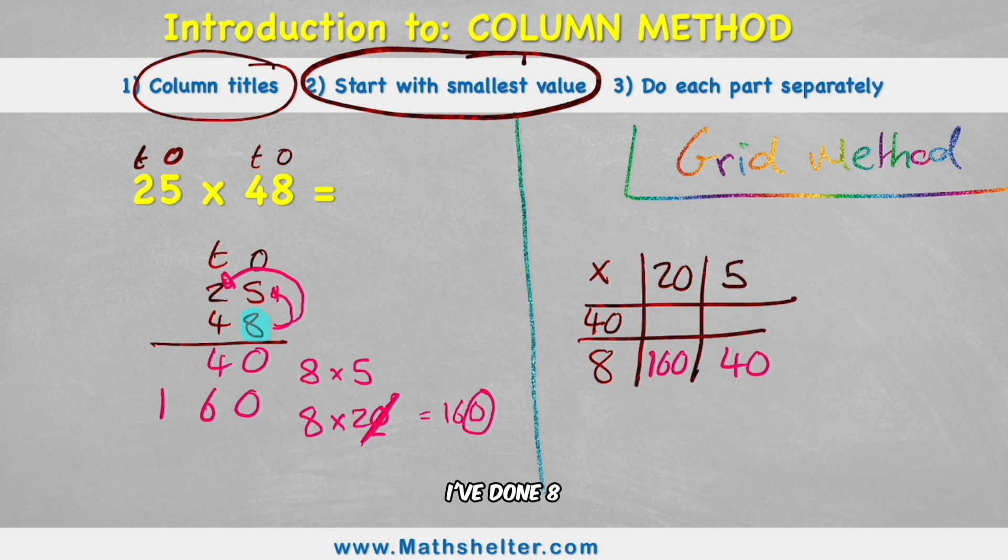Now I've finished with my 8 because I've done 8 times 5 and 8 times 20. I'm now going to move on to my 4. But remember, it's not a 4. It's a 40. So my first question is 40 multiplied by this 5. I'll put it here. 40 times 5. And I'm going to use the same logic. I'm going to forget about this 0 for a moment and just do 4 times 5 is 20. And then put back my 0 at the end. So my answer is 200.